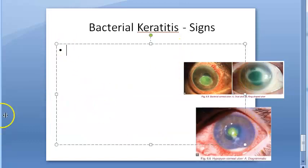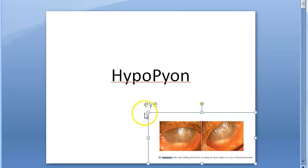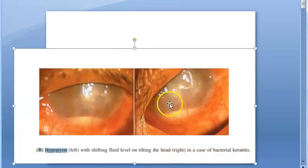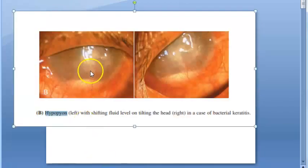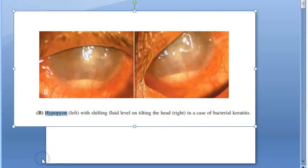The hypopyon moves — when the patient tilts their head and sits for some time, the hypopyon shifts position. We have already covered this in the hypopyon lecture. In bacterial keratitis the hypopyon is sterile and it moves.